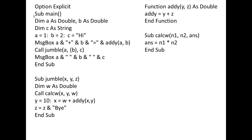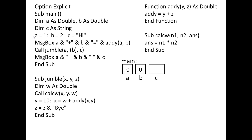In the sub procedure main, three variables are created: A, B, and C. A and B are given a double data type and initially assigned the default value of 0. C is given a string data type and the default value is null or nothing. Next, A is assigned the value 1, B is assigned the value 2, and C is assigned the character string Hi.